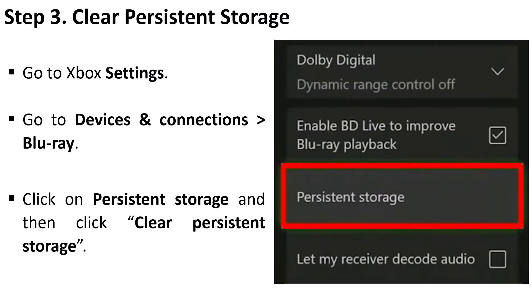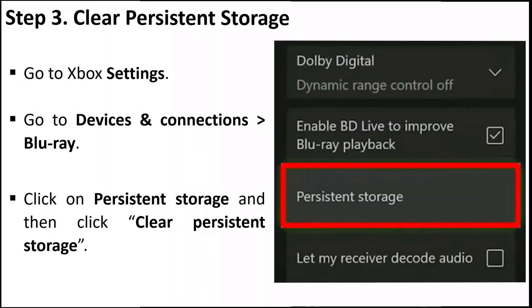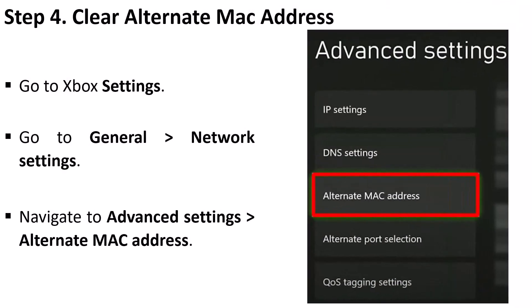Step 3: Clear persistent storage. Note: if you don't see this option, skip this step. Go to Xbox Settings, go to Devices and Connections, then Blu-Ray. Click on Persistent Storage and then click on Clear Persistent Storage.